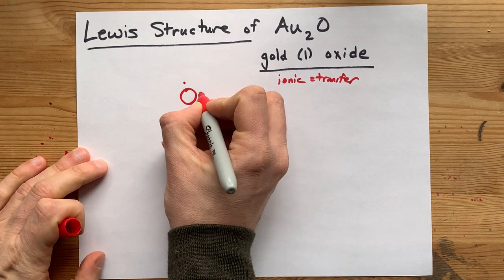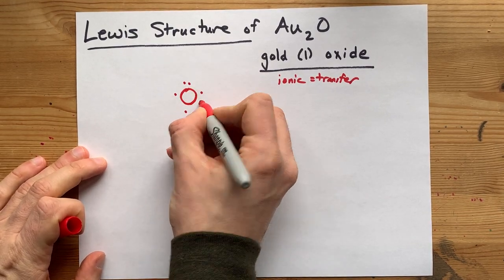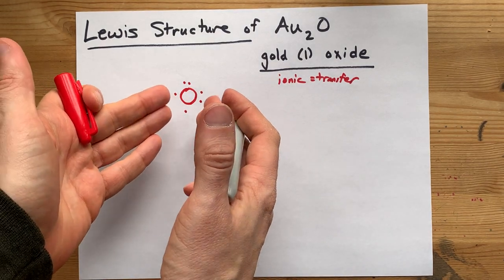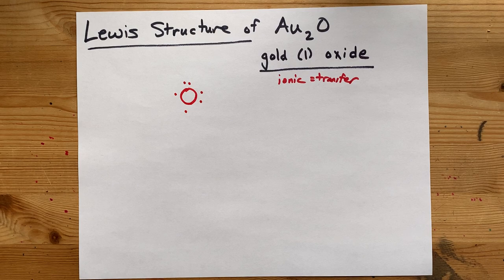There's my O with one, two, three, four, five, six valence electrons. Note how I spread them out before I doubled them up.